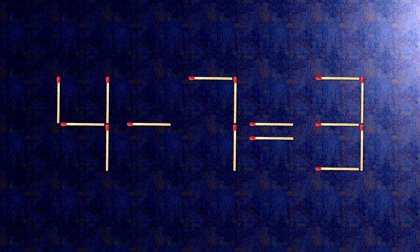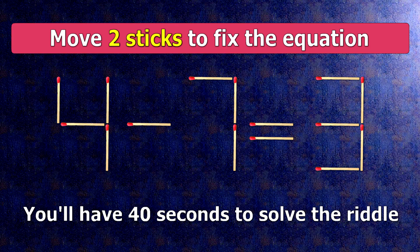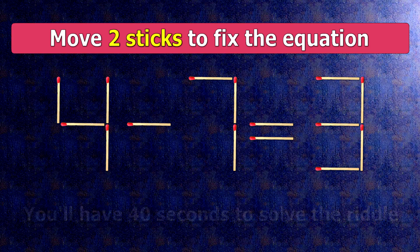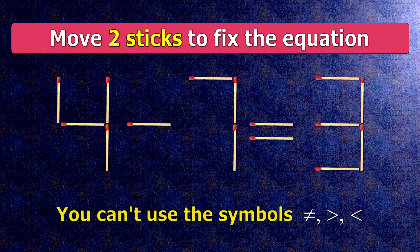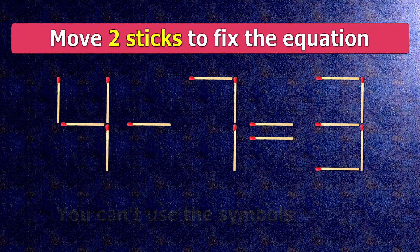We have the equality: negative seven equals three. Our equality is wrong. We need to move two matches to make our equality correct.